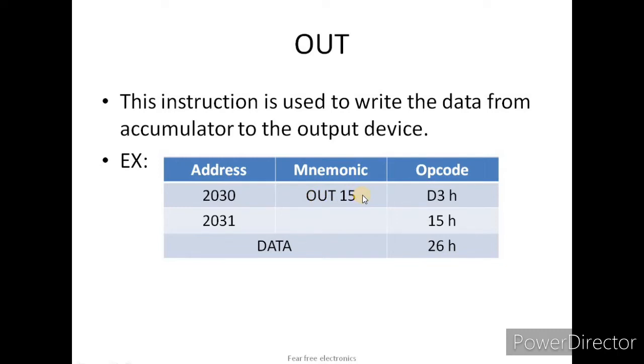These 2 bytes are stored in memory locations. First, one memory location stores the opcode. OUT instruction has hexadecimal code D3h. The next memory location at 2031 stores the address, which I assume is 15h. The data in the accumulator should be transferred to the output device at address 15h.